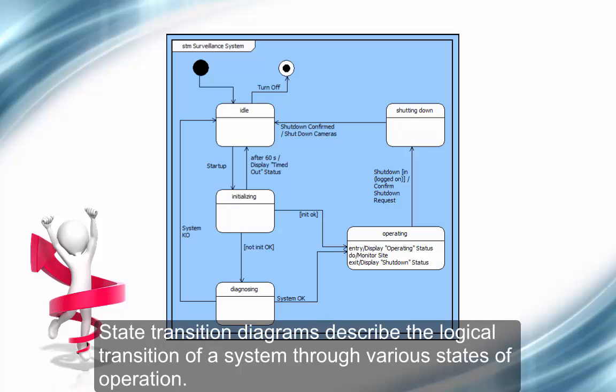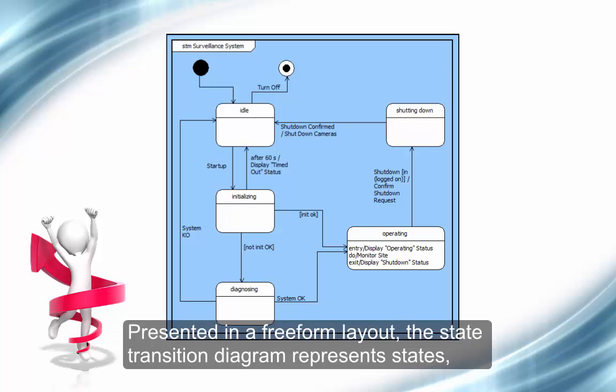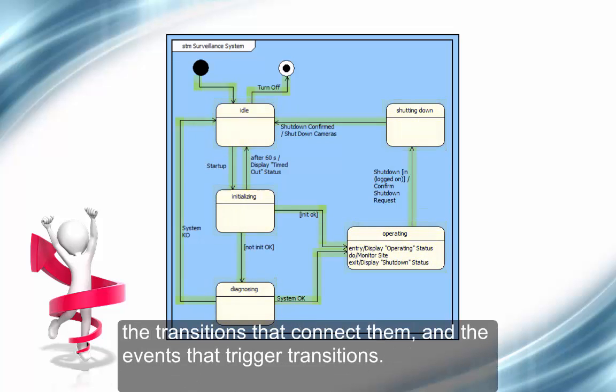State transition diagrams describe the logical transition of a system through various states of operation. Presented in a free-form layout, the State Transition Diagram represents states, the transitions that connect them, and the events that trigger transitions.